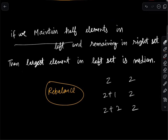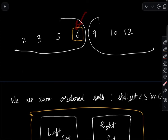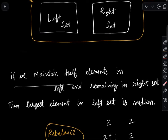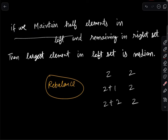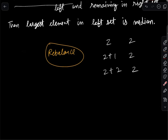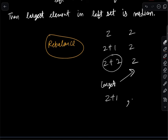If both new elements end up on the same side and we get z+2 and z, the half-element condition is violated. When inserting, if the new element is less than the current median, insert into the left set; otherwise insert into the right set. If left ends up with two more elements than right, take the largest from the left set and move it to the right set.